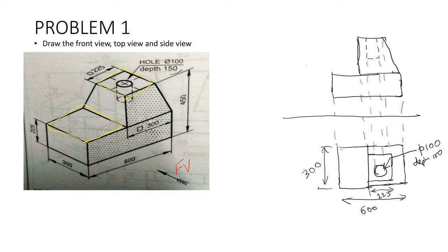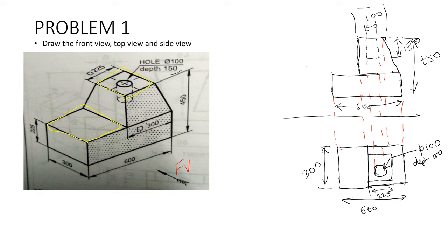This is your top view. We have to mention the dimensions for the front view as well. The overall length is 600, the overall height is 450, and this depth is 150. The diameter is 100. The square distance is 225. Likewise, we have to mention all the dimensions properly. And this depth is 225.